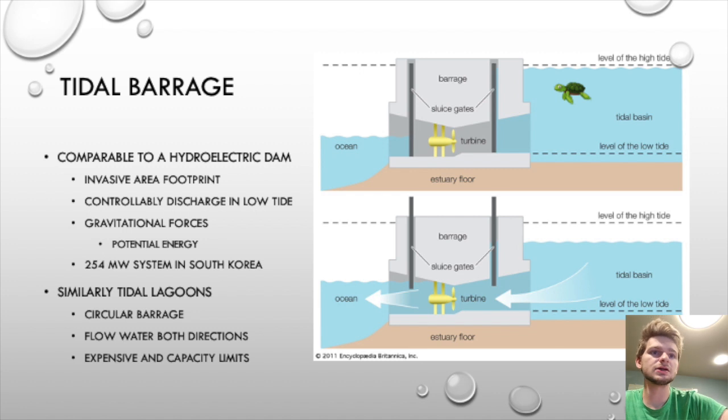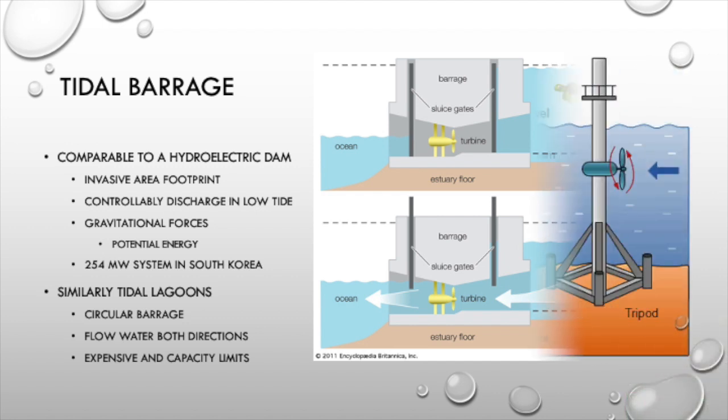A very similar concept to this is tidal lagoons, which are essentially a circular barrage. It is able to do the same exact thing but with a somewhat limited capacity. The ideal thing about this is that with the circular system, you can let water in the reservoir during high tide and generate electricity, and then once it becomes low tide, it would have sealed off the water in there during high tide. It could open up again and then generate electricity as the water comes out during low tide. The water will flow both directions in a similar manner to the oscillating water column concept we talked about before. This one is a little bit more expensive and has some capacity limits as well because you're limited to the amount of water that's in the circular reservoir.